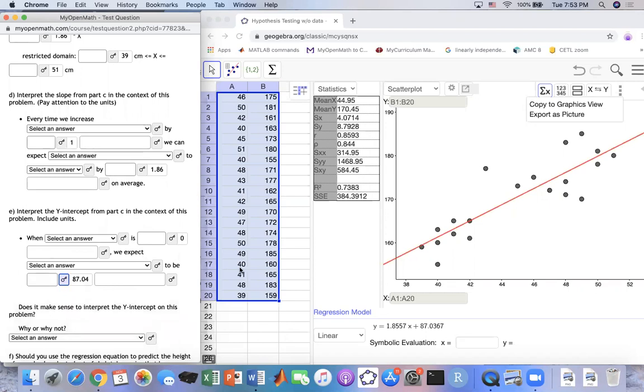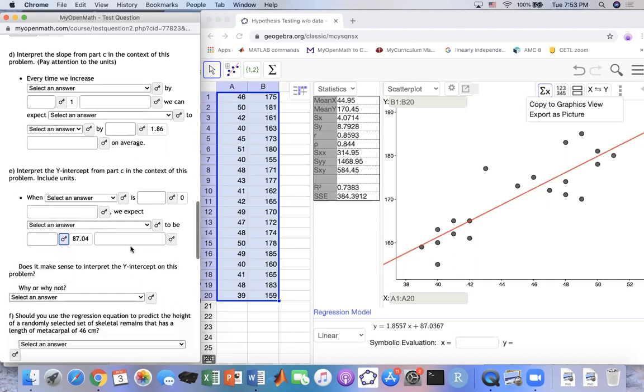But this one doesn't make sense because if the bone remains zero, that means that person does not exist. So how do you have a height? Also, the number has to be within the restricted domain. Therefore, this answer doesn't make sense.